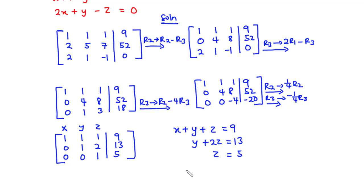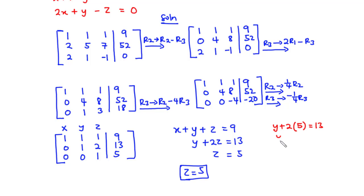From equation 3, z is equal to 5. Substituting into equation 2: y plus 2z equals 13, so y plus 10 equals 13, giving y equals 3.